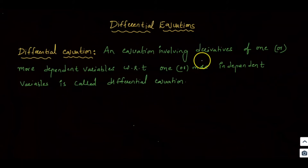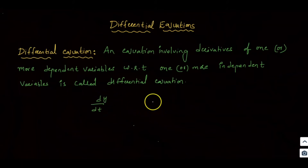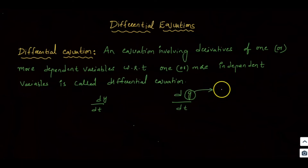An equation involving derivatives — derivatives are written as d by dt. Suppose you have a variable, it is called d by dt. The variable in the numerator is called the dependent variable, and the variable in the denominator is the independent variable.